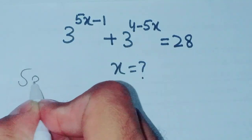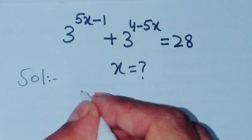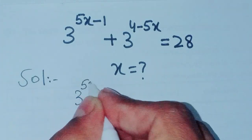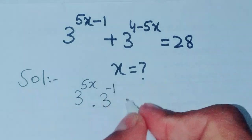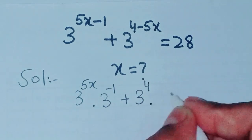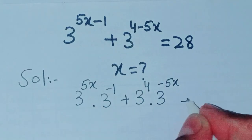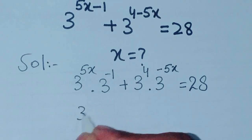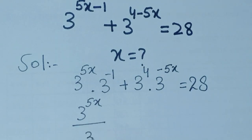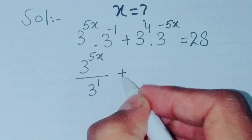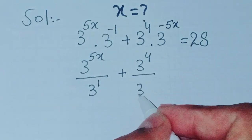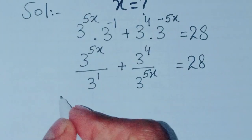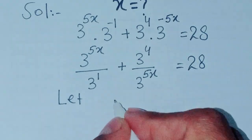First of all, we separate the power. We can write it as 3 power 5x into 3 power minus 1, plus 3 power 4 into 3 power minus 5x, equal to 28. This gives us 3 power 5x over 3, plus 3 power 4 over 3 power 5x, equal to 28.